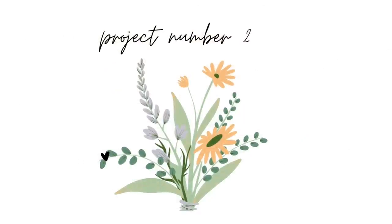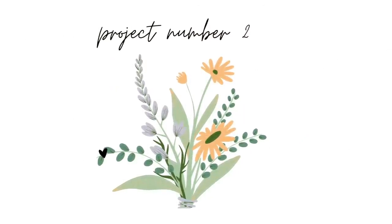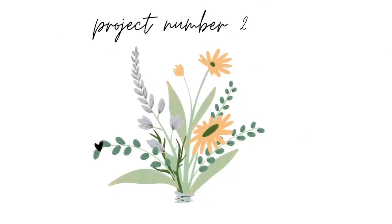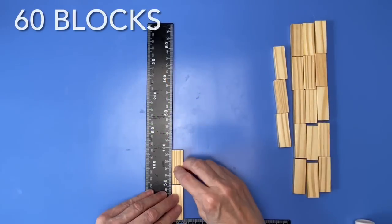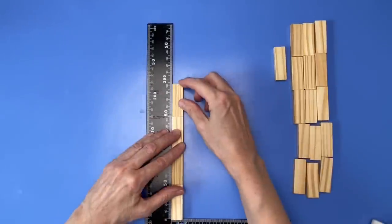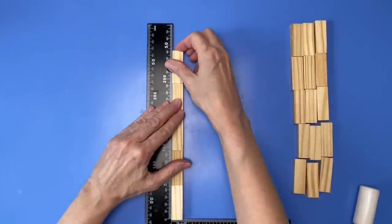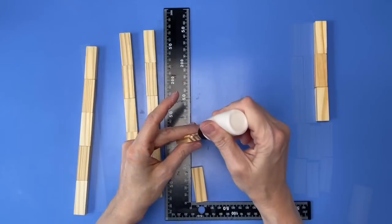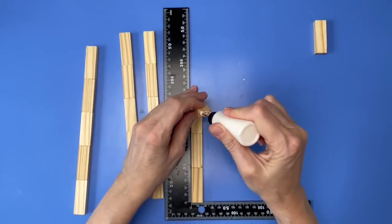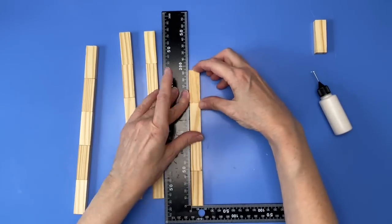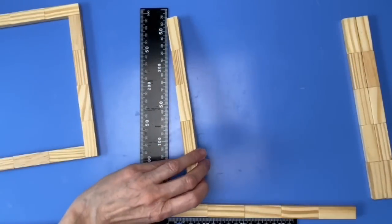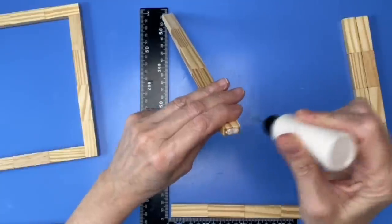Project number two is another wall decor piece that will require 60 tumbling tower blocks. Oh, background change. Glue together four sets of five end to end. When those are dry, make a big old square.